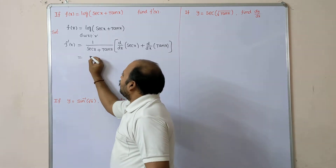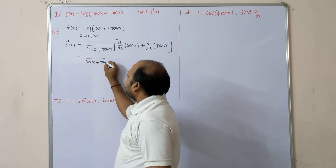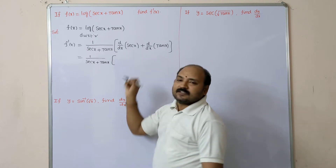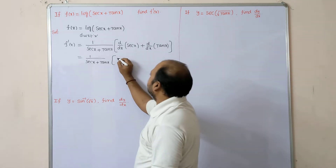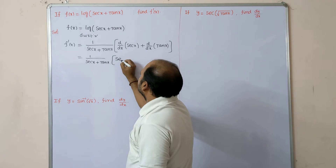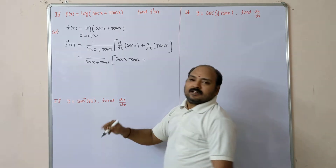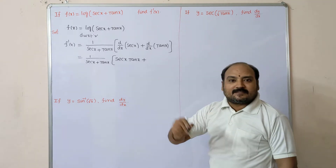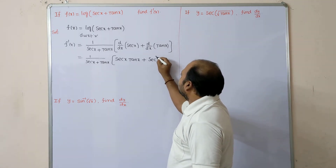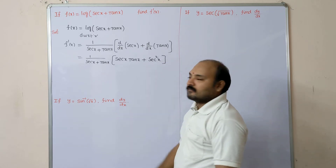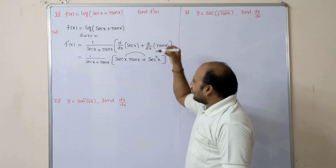Which equals 1/(sec x + tan x). Now, d/dx of sec x is sec x · tan x, and d/dx of tan x is sec²x. So we have sec x · tan x + sec²x.